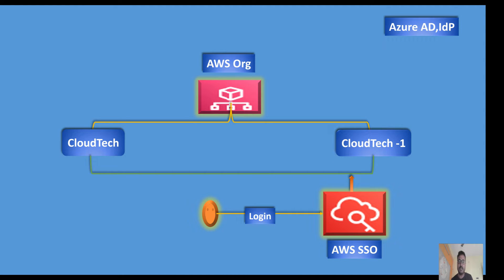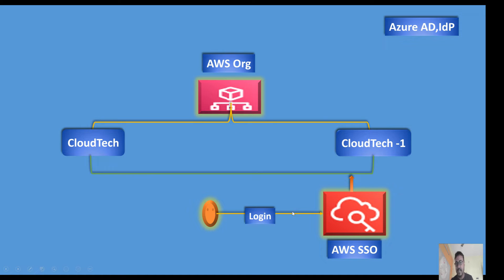You don't need to bother about each and every application or each and every account having different username and password. That's the advantage of SSO. Today I will show how we can create different accounts like cloud-tech-one and cloud-tech-two, how we can configure and enable SSO. Let's move on to the AWS console and I will demonstrate how we can do that.